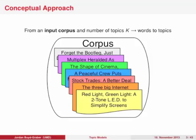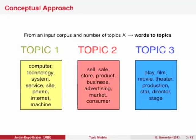From a black box perspective, topic models take as input a bunch of documents and an integer k. Given this input, a topic model will find the k topics that best describe the documents.